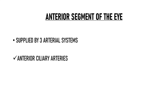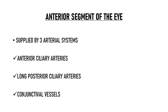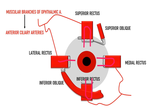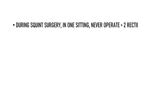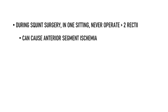The anterior segment of the eye is supplied by three arterial systems: the anterior ciliary arteries, the long posterior ciliary arteries, and the conjunctival vessels. Anterior ciliary arteries contribute about 50% of anterior segment circulation. This matters clinically because disinsertion of a rectus muscle during squint surgery can cause hypoperfusion of that area. To maintain optimum anterior segment circulation, no more than two rectus muscles of one eye should be operated upon in one sitting, as operating on more can cause anterior segment ischemia. Two recti plus an oblique is acceptable since obliques do not contribute to anterior segment circulation.